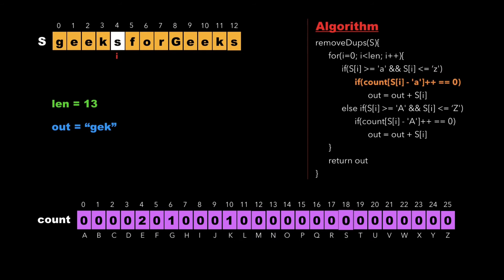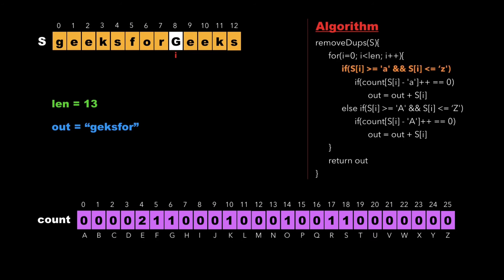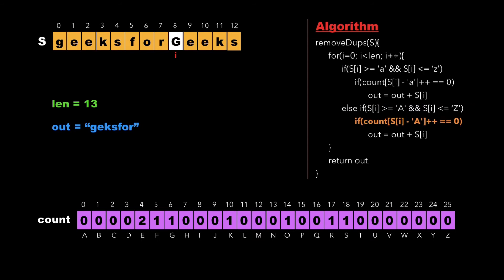Now we have reached the character at location 8, which is capital 'G'. Since capital 'G' is not a lowercase character, we are in the else part. Here we check whether the value of count of 'g' is equal to 0. Since the value of count of 'g' is not 0, we just increment i and move on.